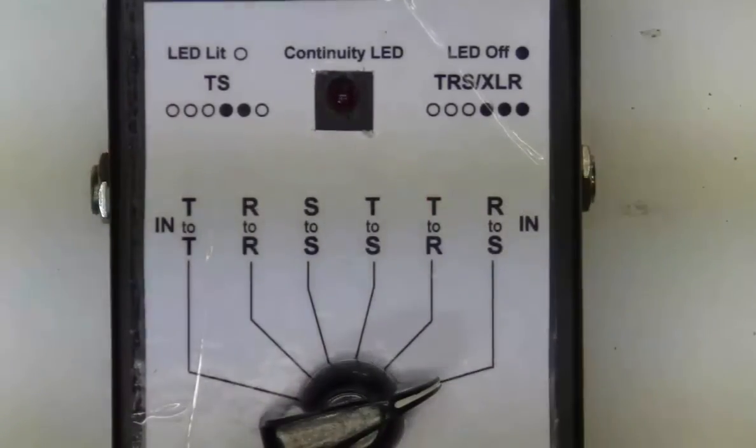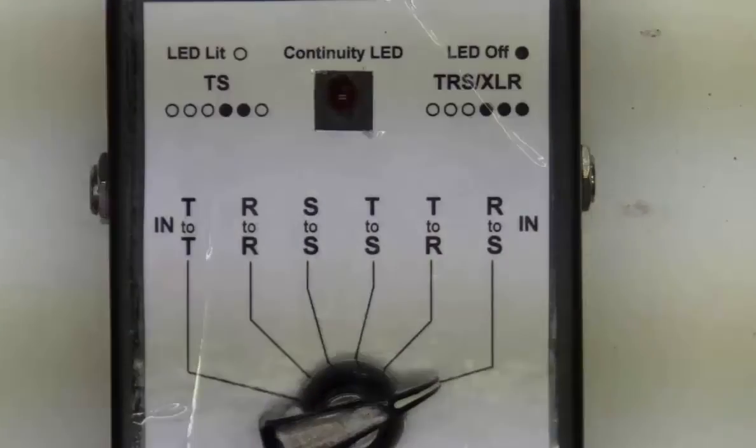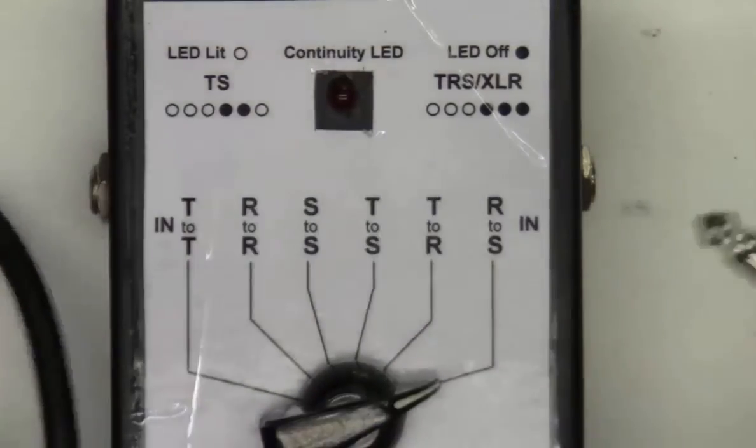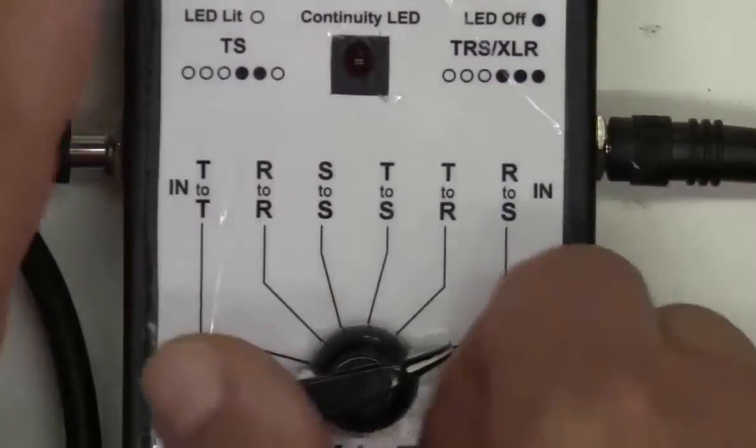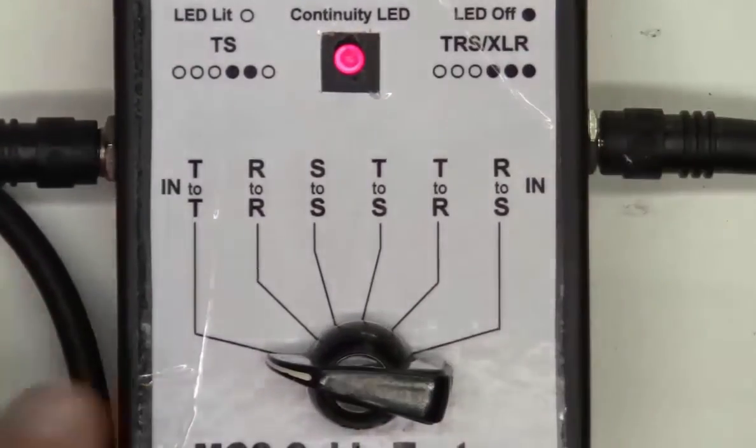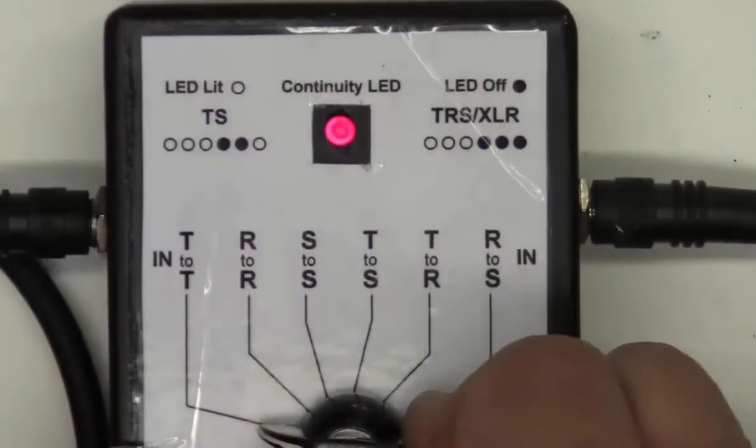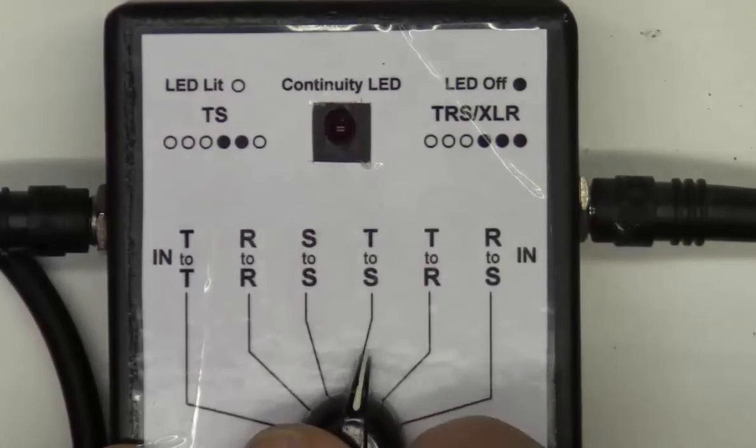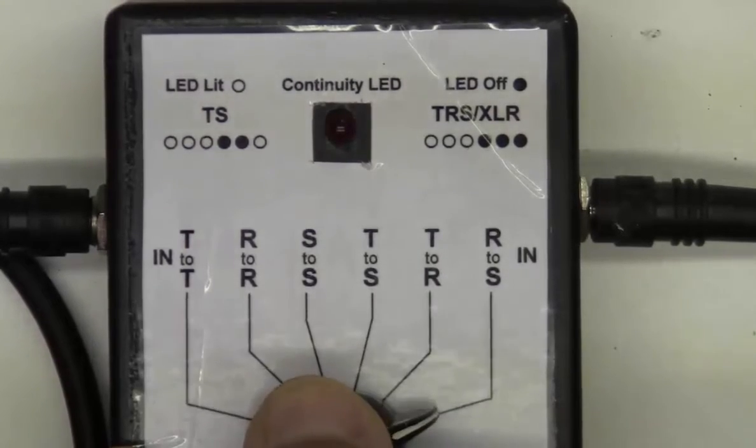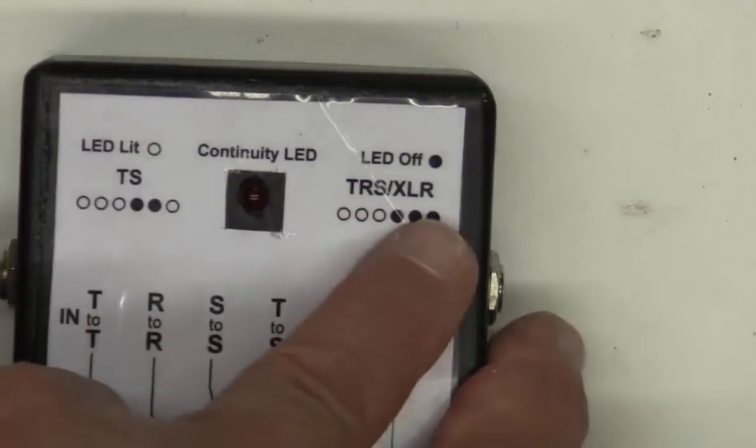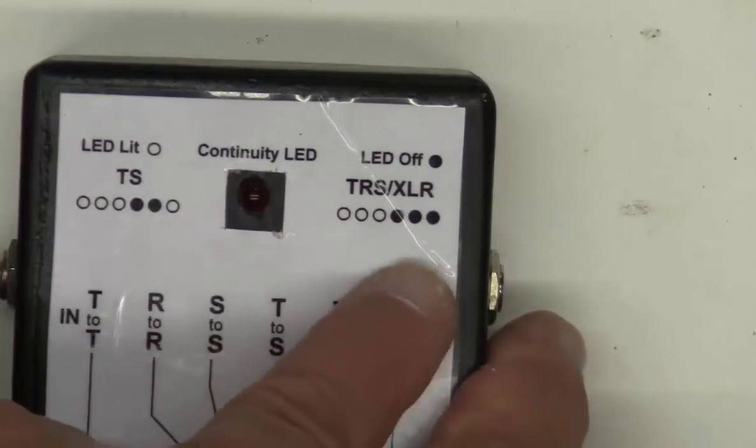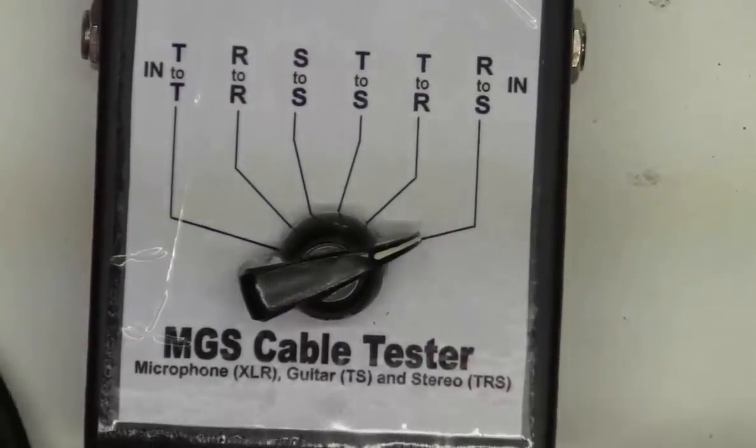Now I'm going to take a stereo cable, that's a TRS, plug that in, and we're going to go lit, lit, lit, off, off, off. If we look at this legend here, it says for TRS and XLR it should be lit, lit, lit, off, off, off. So that is good as well.